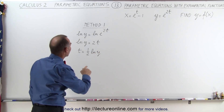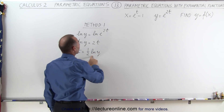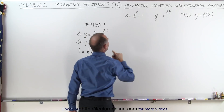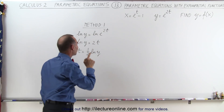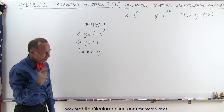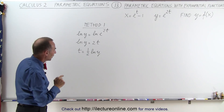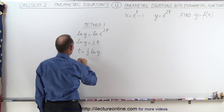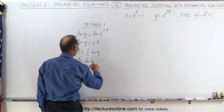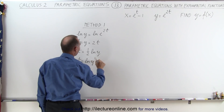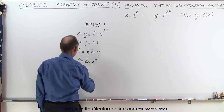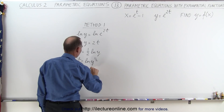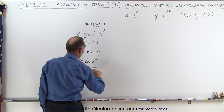So what we could do is take this and plug it in for t. However, we can probably simplify that a little bit more. One half the natural log of y can be written as t equals the natural log of y to the one half.